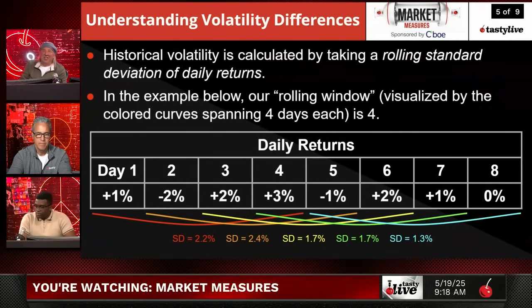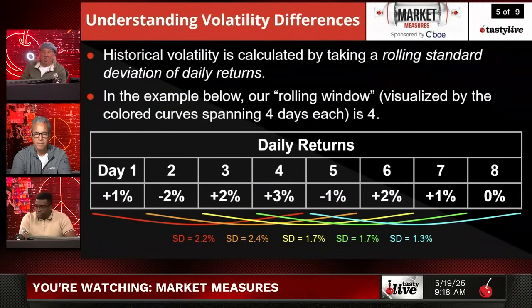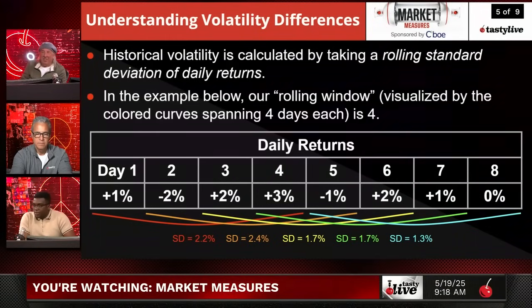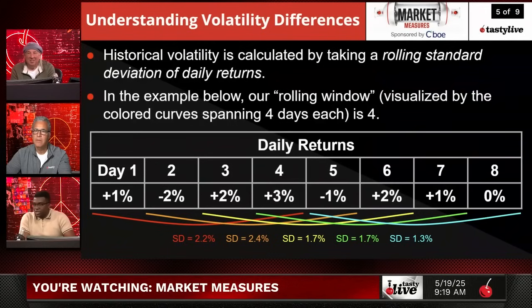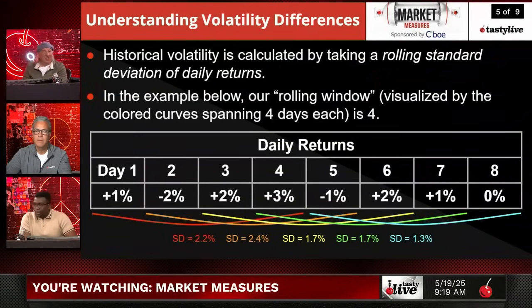Historical volatility is calculated by taking the rolling standard deviation of daily returns. In the example, the rolling window is four days. So we take eight days in general and roll after every four days. For example, the return for day one is 1% and on the fourth day it's 3%. When we roll, we compute the standard deviation between the first day and the fourth — that's the standard deviation of returns based on a rolling four-day window.